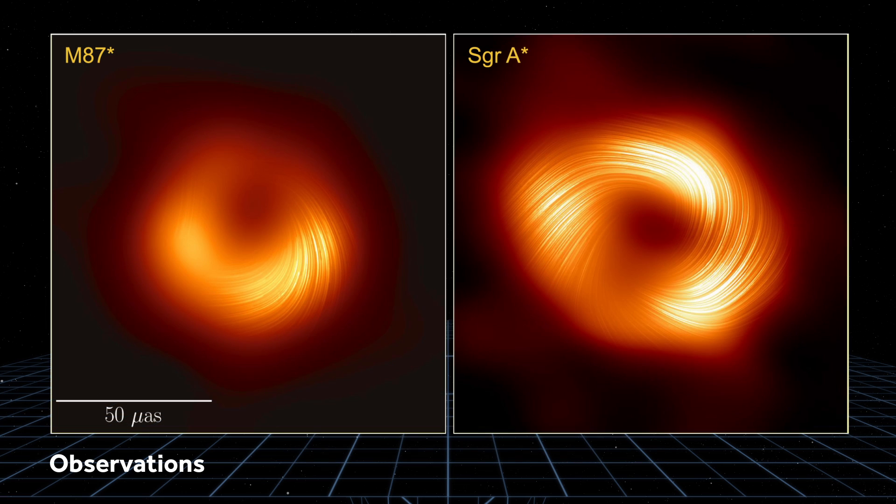It's remarkably similar to our image of M87 star. Now that we have two polarized images, their commonalities and differences allow us to learn more about black hole magnetic fields.